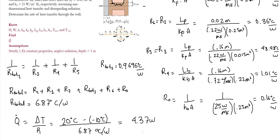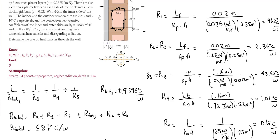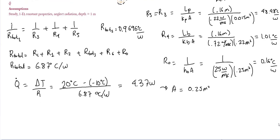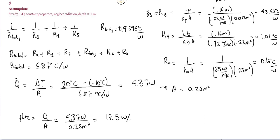This value of 4.37 W was evaluated for a cross-sectional area of 0.25 m², which is only the small repeating section. To scale to the full wall, we calculate the heat flux: Q divided by area equals 4.37 W divided by 0.25 m², giving a heat flux of 17.5 W/m².